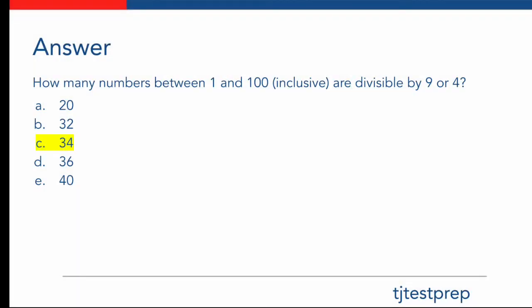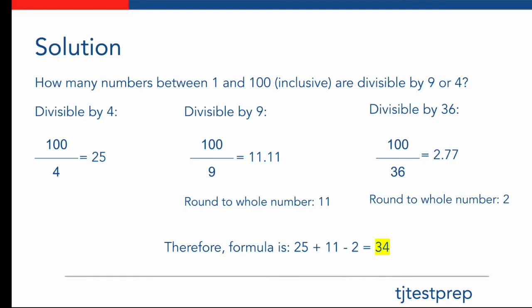So the answer here is C, 34. Let's see how we came up with this answer. In order to approach this problem, we divided it up into three steps. First, we tried to find how many numbers were divisible by 4, which gave us 100 divided by 4, which is equal to 25. Next, we found how many numbers were divisible by 9, taking 100 over 9, which gave us 11.